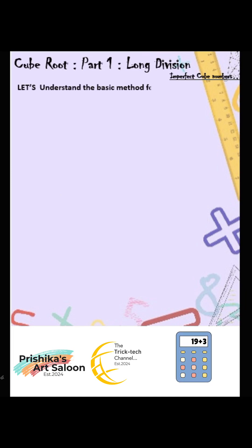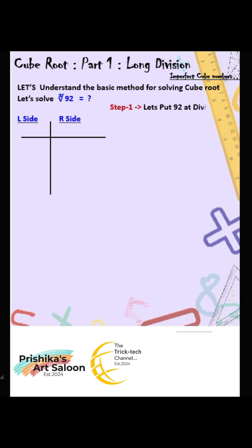Let's understand the basic method for solving cube root. Let's solve cube root of 92 equals question mark. Step 1: Let's put 92 at dividend. Step 2: Now pair in cubes the number starting from right. Here first pair will be 092 and second pair not possible.